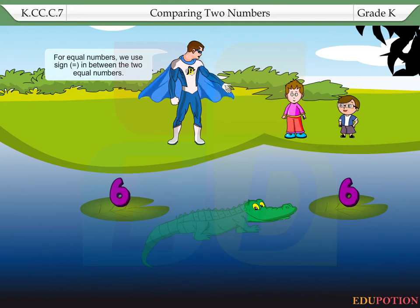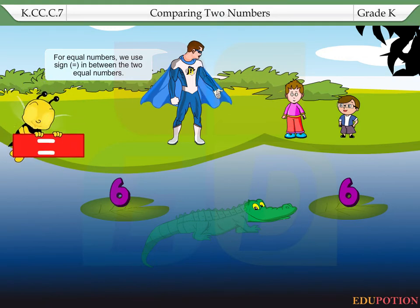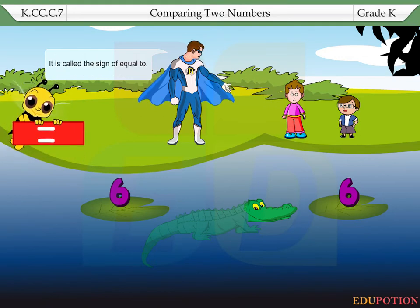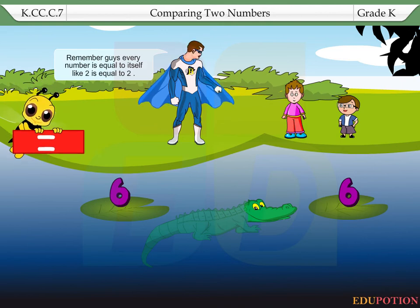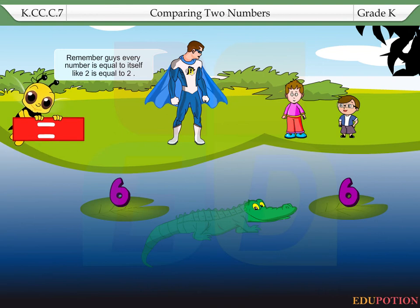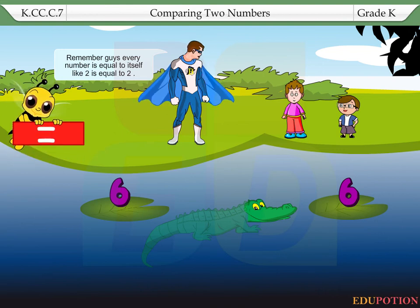For equal numbers, we use the sign equal to in between the two equal numbers. It is called the sign of equal to. Remember, guys, every number is equal to itself. Like two is equal to two.